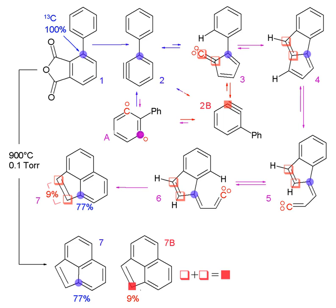Mass spectrometry detects the difference in an isotope's mass, while infrared spectroscopy detects the difference in the isotope's vibrational modes. Nuclear magnetic resonance detects atoms with different gyromagnetic ratios. Radioactive decay can be detected through an ionization chamber or autoradiographs of gels.